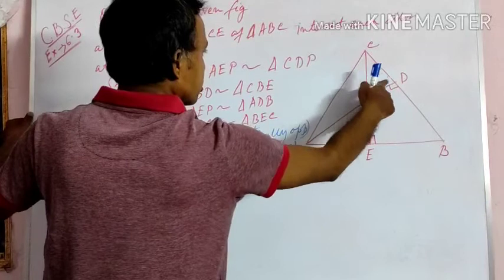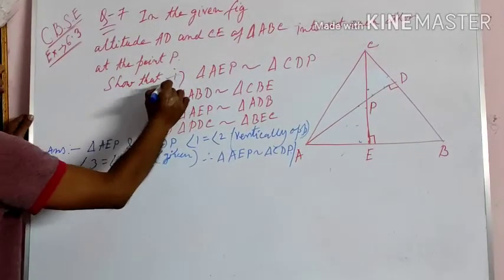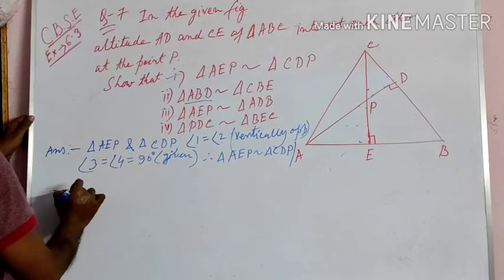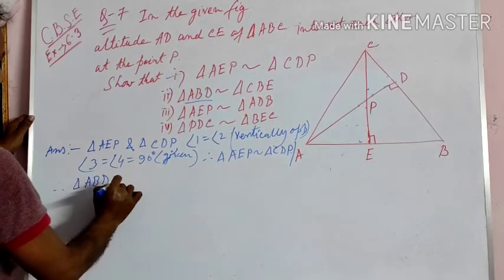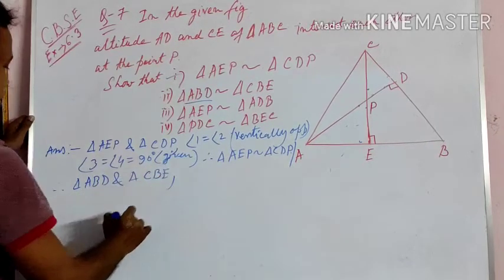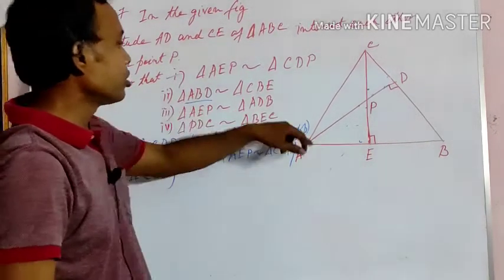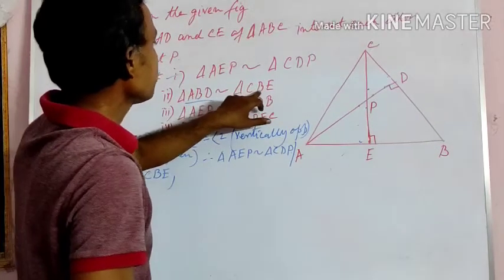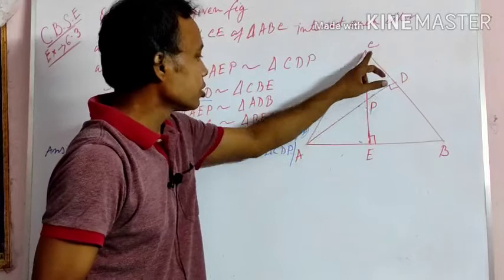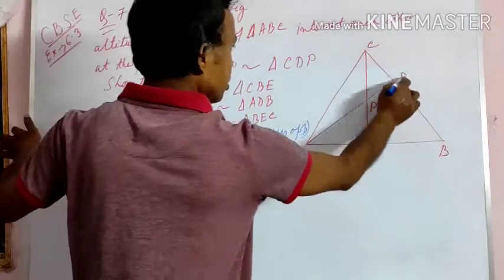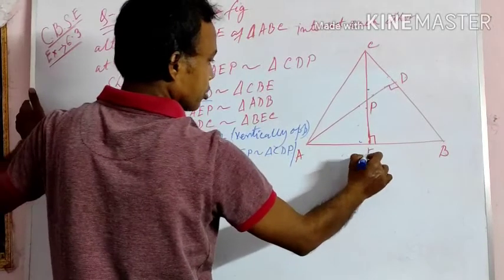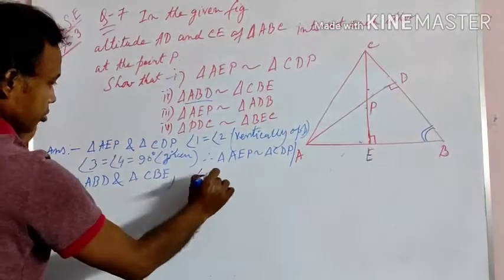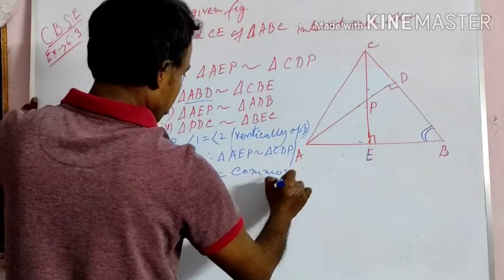Now for the next question. In triangle ABD and triangle CDE, angle B is a common angle for both triangles.